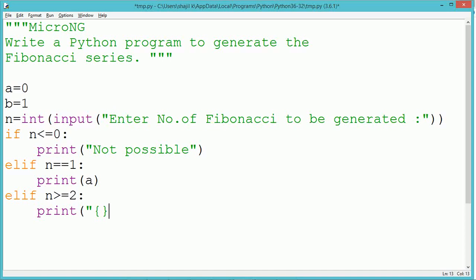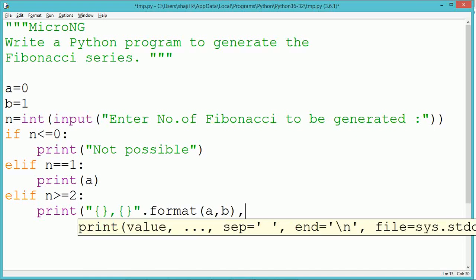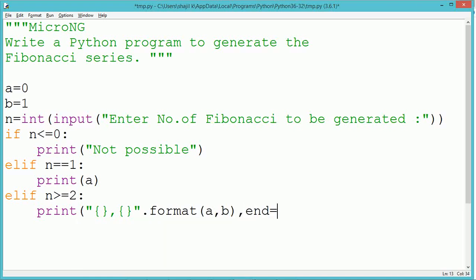If the value of n is greater than or equal to 2, we first print the first two Fibonacci numbers a and b.